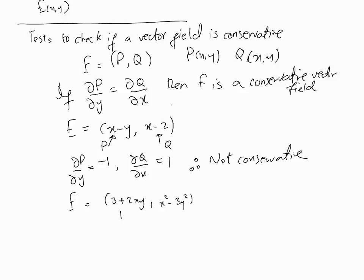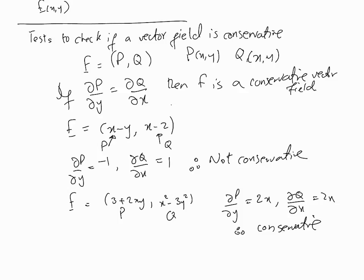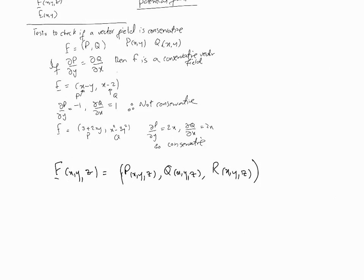Here's another example where P and Q are given. The partial of P with respect to y turns out to be 2x, and the partial of Q with respect to x is also 2x, so they are equal and therefore the vector field is conservative. These are rather simple, easy ways to test if a vector field is conservative, after which one can be assured of finding a potential function small f. Another test: since we've covered the curl of F, if the curl of F is equal to the zero vector, then F is conservative.